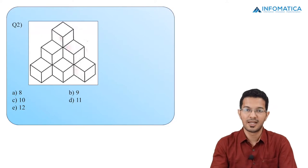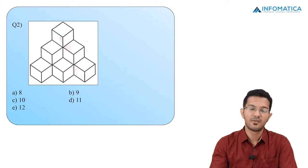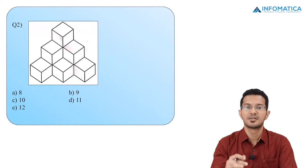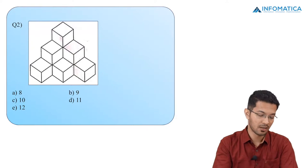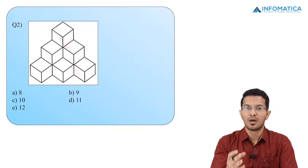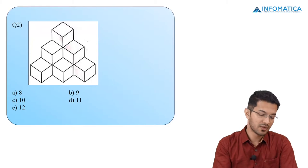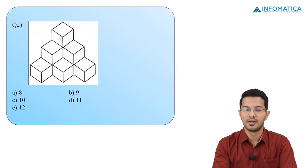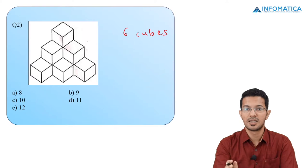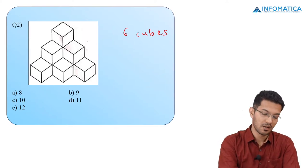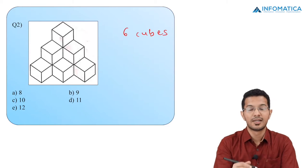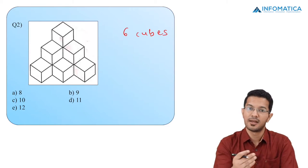Now let us go for the next MCQ. In this we have been given a cube-like structure, but it is somewhat like a step structure going from bottom to top. Let's start counting. If I look carefully, I can see 1, 2, 3, 4, 5, 6 — so I can see 6 cubes right now. These 6 cubes are totally visible. Then I will look for the hidden cubes which cannot be seen.